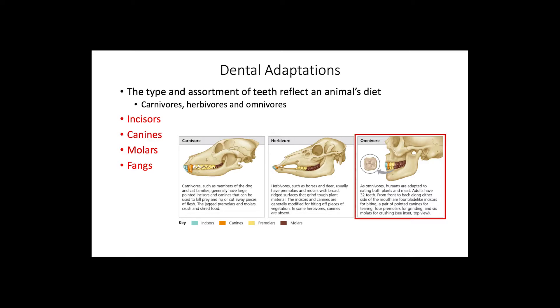Some animals, like venomous snakes, have fangs that are adapted to inject venom into their prey.